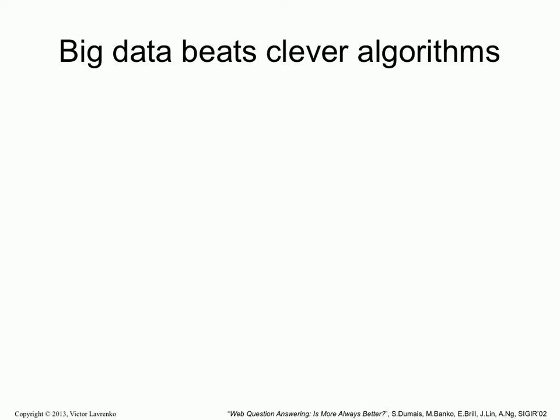So another example, and this again is a practical example. This idea has been popular over the last few years: you can either build really clever algorithms, or you can build relatively simplistic algorithms and put lots and lots of data into them. And if you do the second one, it actually a lot of the time ends up beating the more clever algorithms. So simple, dumb algorithms with lots of data will give you better results than really clever algorithms with less data.